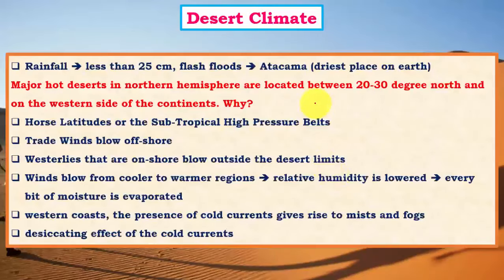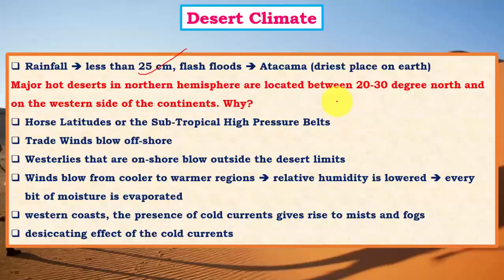Rainfall in both mid-latitude and hot deserts is less than 25 centimeters average annually. A question from Mains 2013 asked: most hot deserts in the northern hemisphere are located between 20° and 30° north and south latitudes and on the western side of continents — why? To answer this, we need to understand several factors. Key points include: the presence of horse latitudes (subtropical high pressure belts) where air is descending, resulting in no cloud formation and no rain; and trade winds blowing offshore.